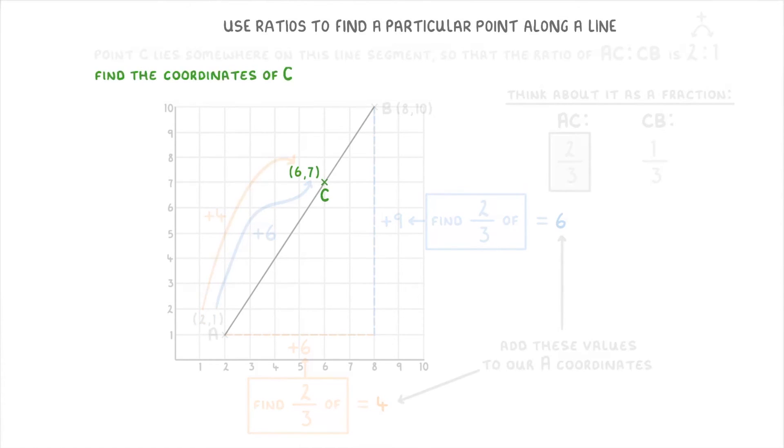And that's it. We've now found that C is at 6, 7, which is 2 thirds of the way between A and B.